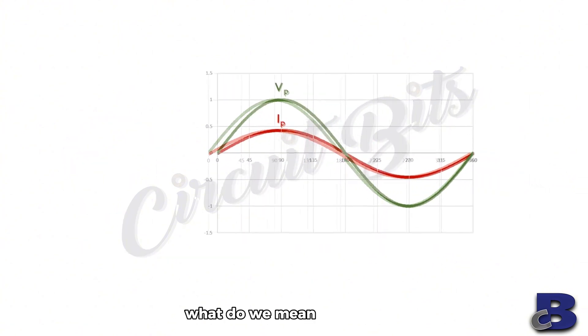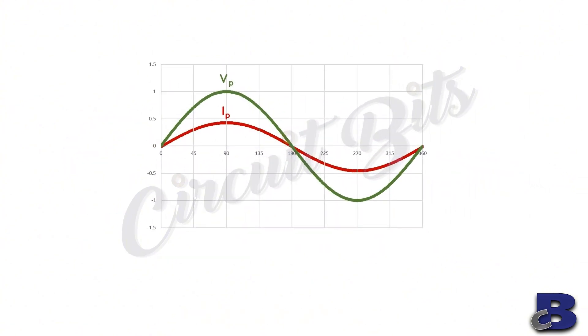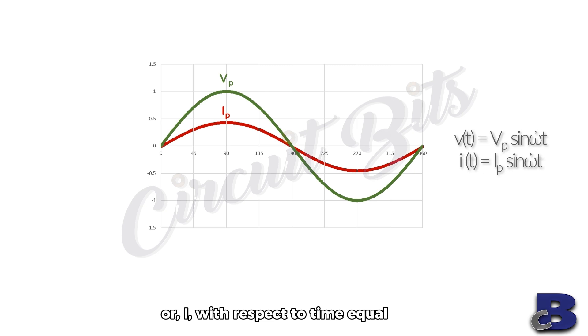What do we mean by in phase? When two waveforms of a circuit cross the zero point at the same time and reach their maximum values at the same time, these waves are said to be in phase. Instantaneous value at any point in time can be found by v(t) equal to Vp sin ωt for voltage, or i with respect to time equal to Ip sin ωt for current.